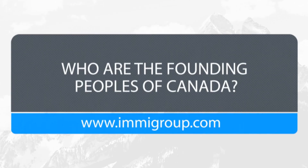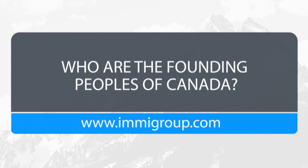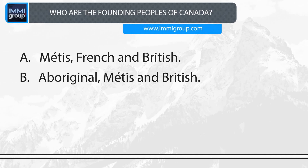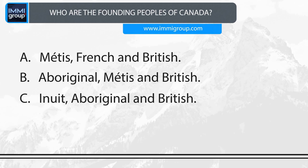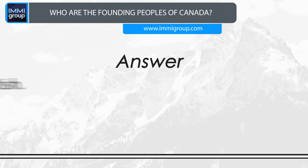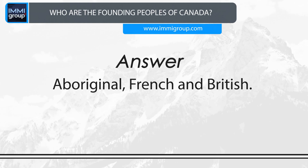Who are the founding peoples of Canada? A. Métis, French and British. B. Aboriginal, Métis and British. C. Inuit, Aboriginal and British. D. Aboriginal, French and British. Answer: Aboriginal, French and British.